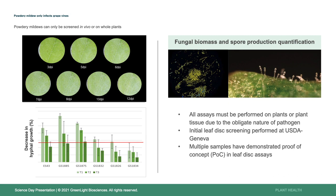These assays were done in collaboration with USDA Geneva, and multiple samples are demonstrating activity on leaf disc, as shown in the graph on the bottom left. The red line is our negative control — anything above it is performing better and we want to advance. It's a percentage of reduction in hyphal growth, so bigger bars are better. At the initial time point, there is quite a bit of reduction, but as time goes on, there is less reduction in the fungal system.